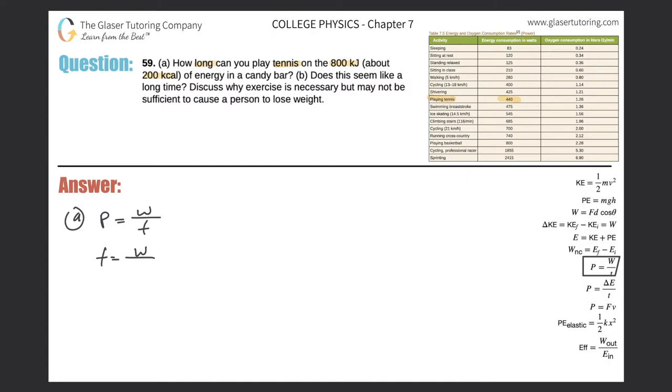Now to figure out the time I need to know these two variables: work and power. Power needs to be in watts and work needs to be in joules. So this shouldn't be that bad. They gave me the work in the problem in kilojoules, but not a big deal. I just have to convert that into joules, so essentially it would be 800 times 1000.